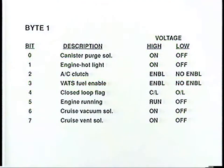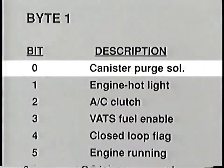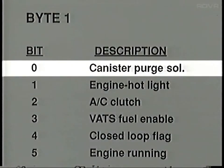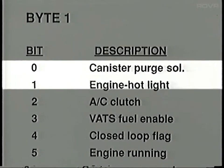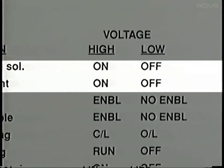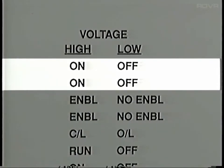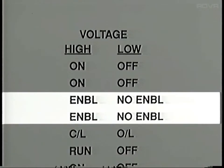The low signal is ground, and for the PCM's diagnostic line, high has been 5 volts — but that will be changing. Each of these signals is a bit, and eight of them form a byte. In a PCM system byte, bit 0 might be programmed to be read as information about the canister purge solenoid, bit 1 could concern the engine hot light, and so on. For both of these bits, high voltage could be programmed to mean the device is on, and low could mean it's off. For bits 2 and 3, high could mean enabled, and low could mean not enabled.